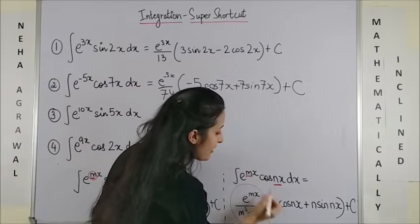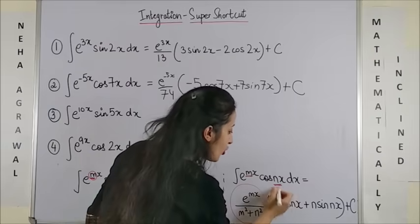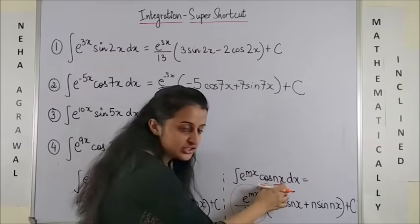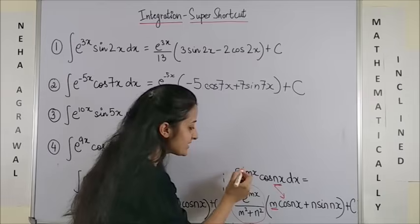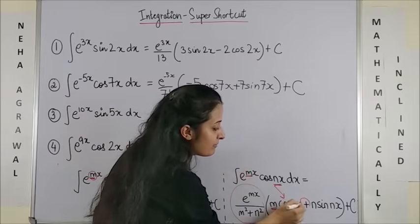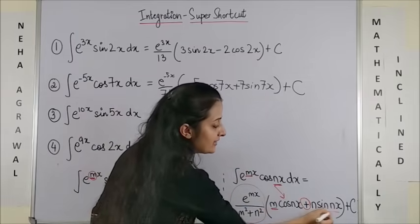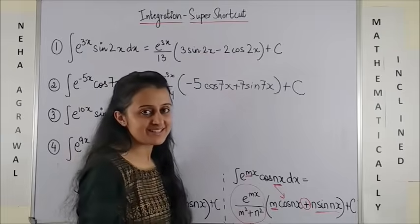Here, however, you have m into cos nx, which was my function. And instead of minus, you have plus n and the remaining sin nx plus c.